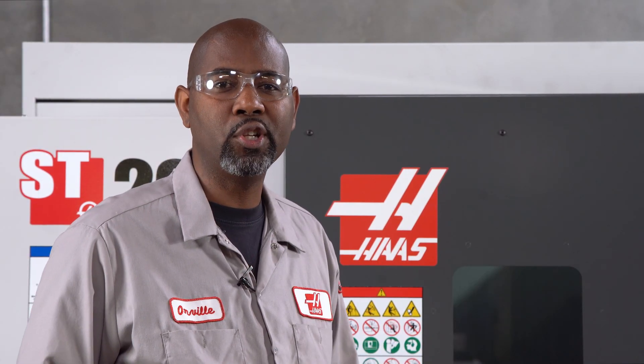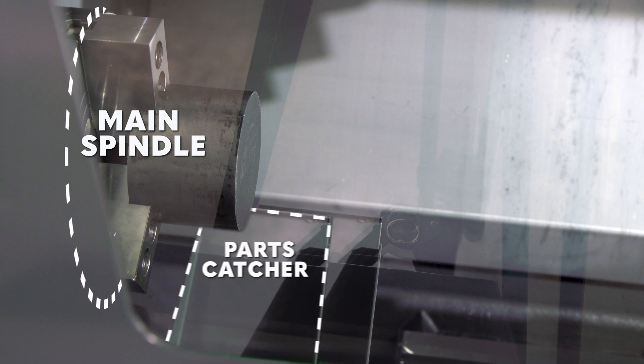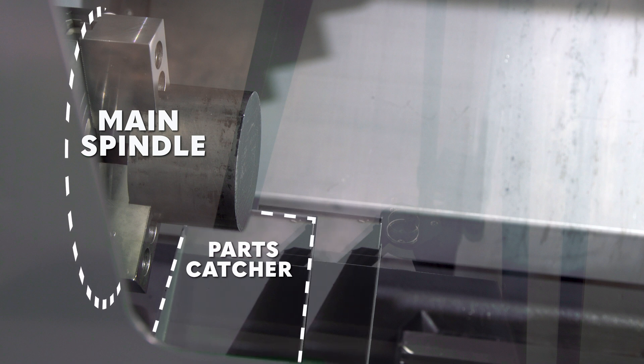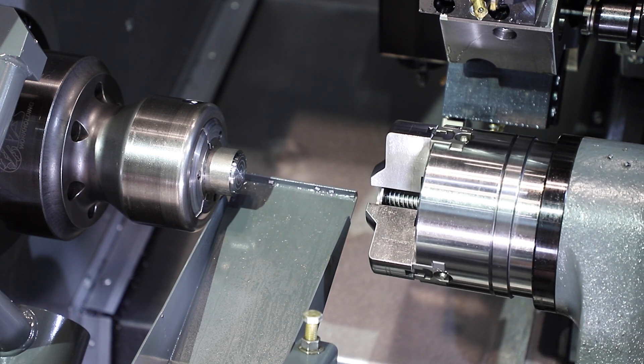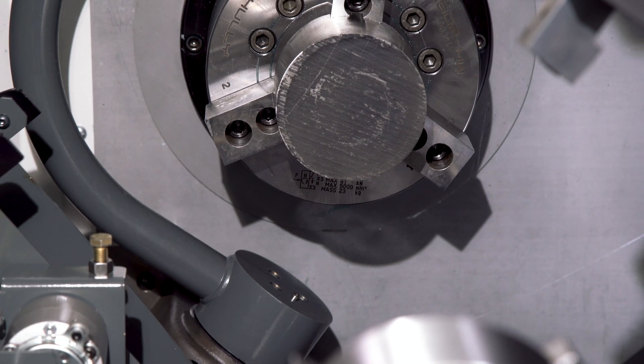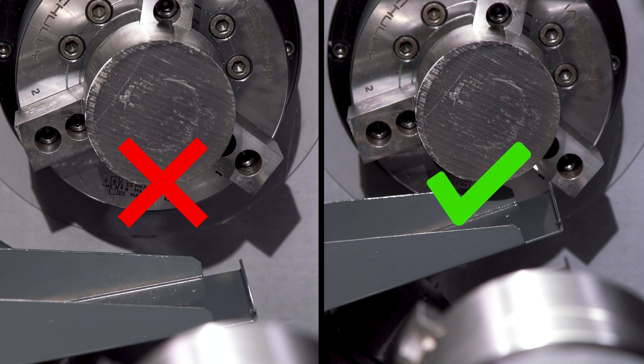There are times when you need to adjust the stroke on the parts catcher depending on how far the parts catcher is from the face of the chuck on the main spindle or where you need to eject the parts on the secondary spindle. And also, when you want to change the position of how far the chute rotates in order to accommodate a finished part of a different diameter.